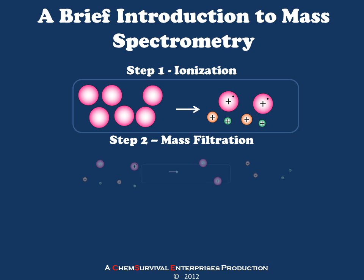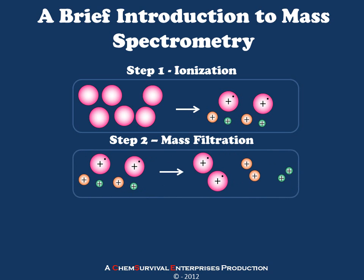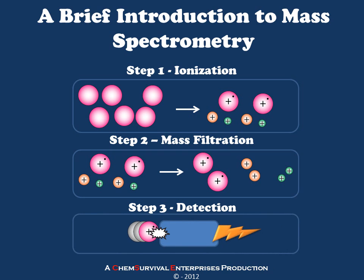Once we've created our ions, the next step is mass filtration or mass analysis. In some way, we need to organize all of the ions generated based upon their mass and separate them in space because of this parameter. The final step is detection, where we'll be trying to locate where and how these ions are moving and use that information to determine what their masses must be. This is the source of mass spectrometry experimental data.